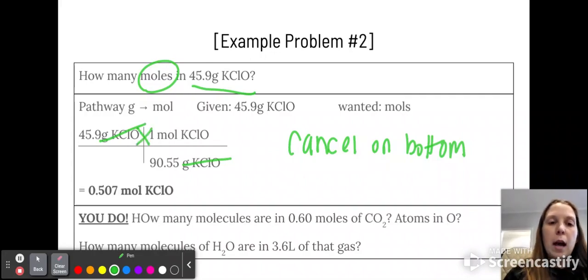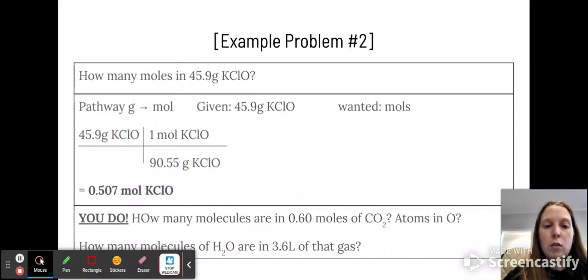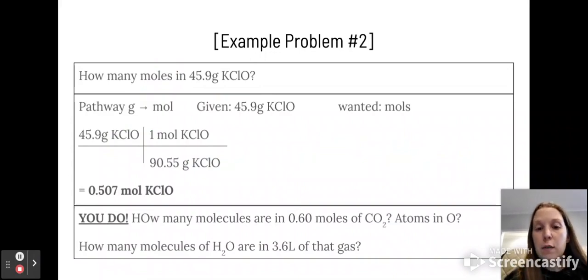You multiply across and then divide by what's on the bottom. So you would do 45.9 times 1, then divide that by 90.55 to give you 0.507 moles of KClO. So I want you to go ahead and pause the video, and I want you to try this example. It is pretty difficult, so go ahead and try those.